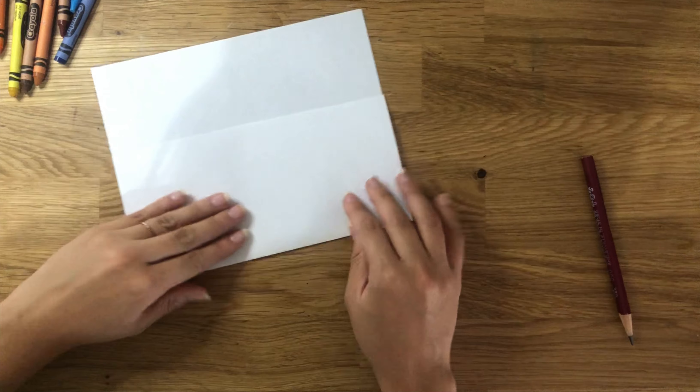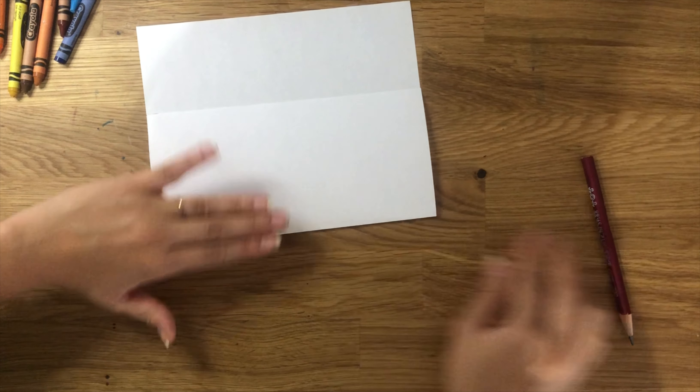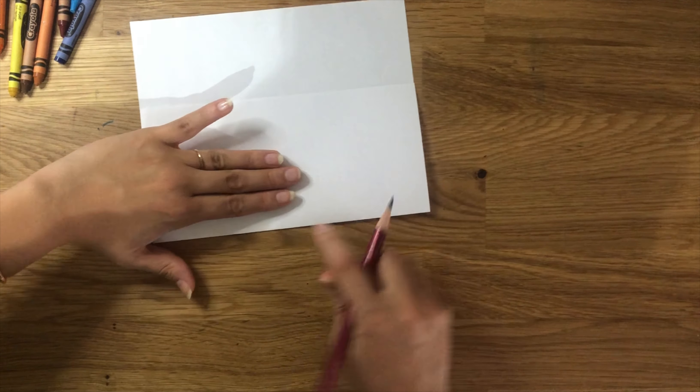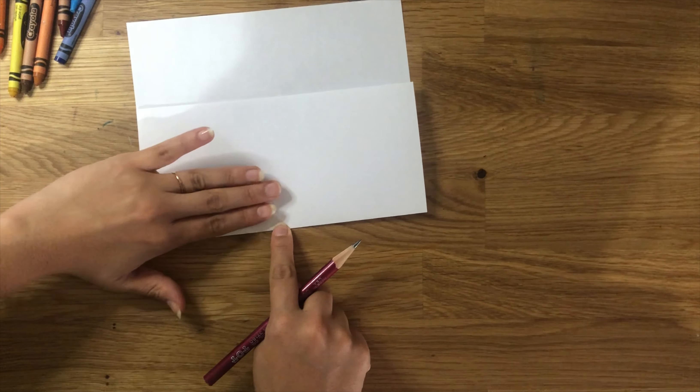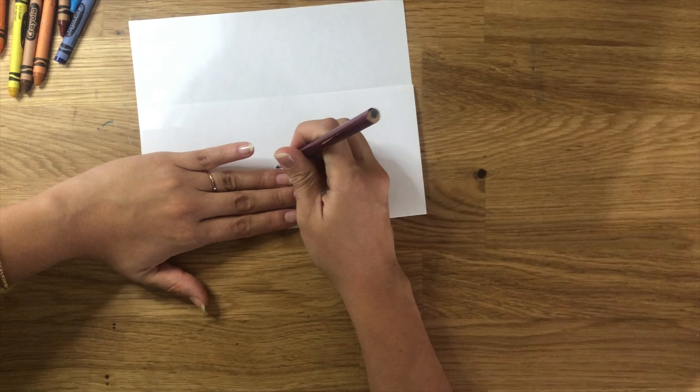At the bottom middle of the paper, we're going to measure three fingers going up. Place your fingers down, make sure they start at the end of the paper, and then count three fingers up and make a mark right above your fingers. We're going to draw a square here.